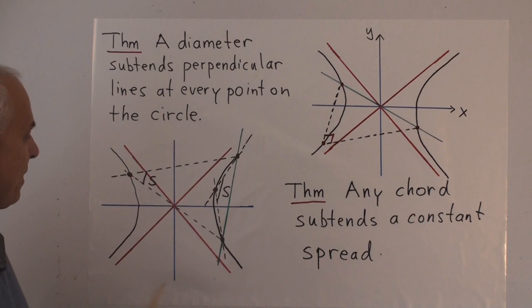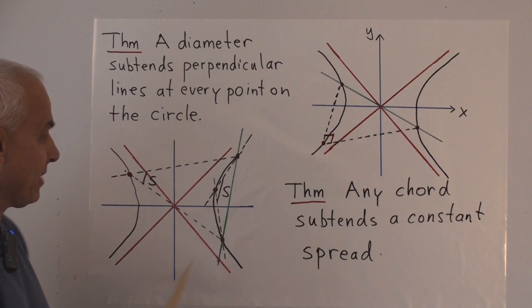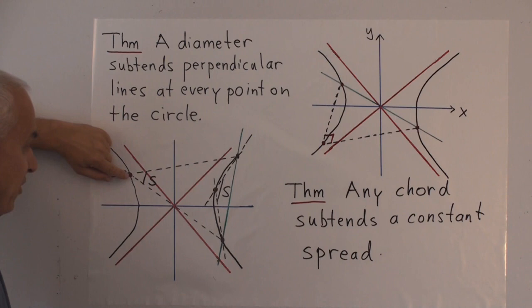And the last thing that we'll mention here, is that if you have a chord of our red circle, in other words any two points with a line through them, then that chord subtends a constant spread on the hyperbola. That means that if you choose any other point, any other variable point, and look at the spread subtended by these two fixed points, that spread, the spread between those two lines, and of course now we're talking about the red spread, not the usual spread, but the spread in red geometry, then this spread is constant no matter where this point is.